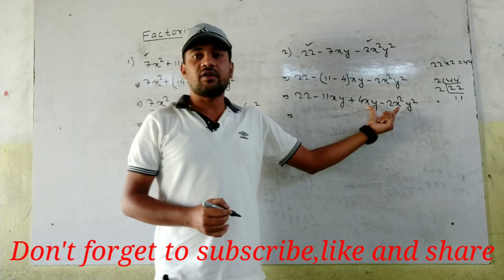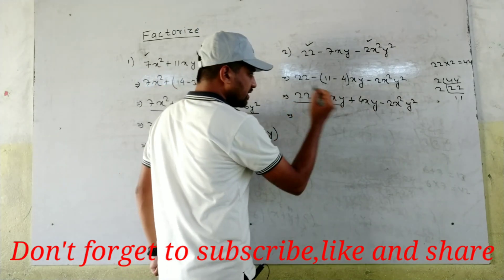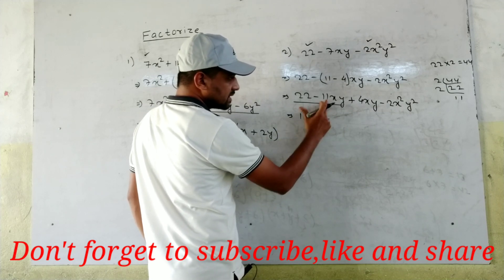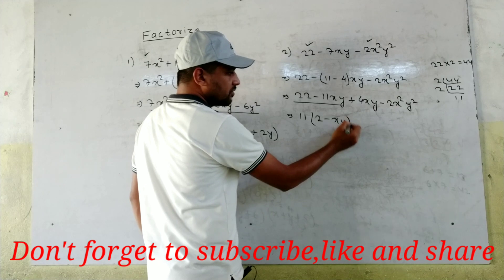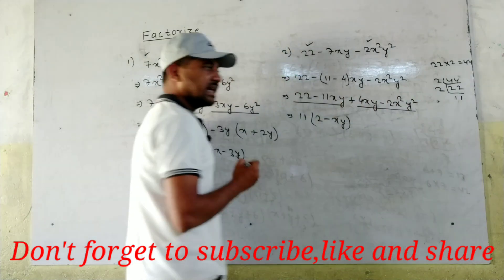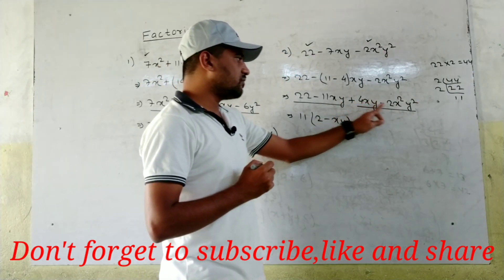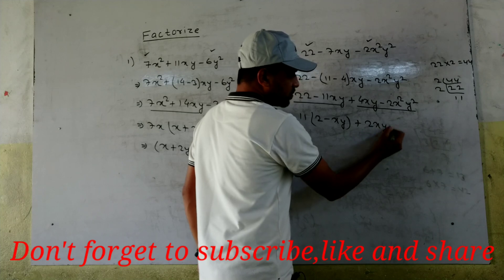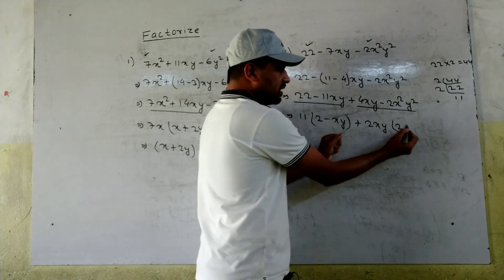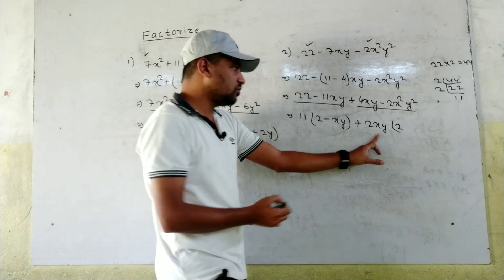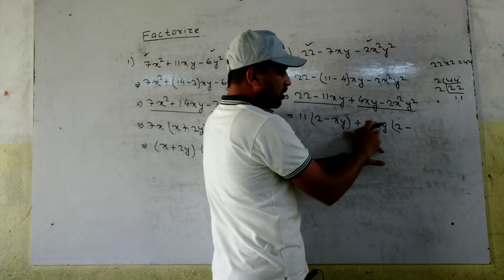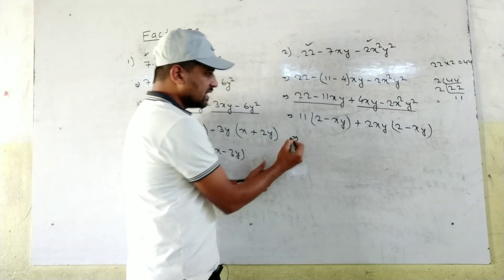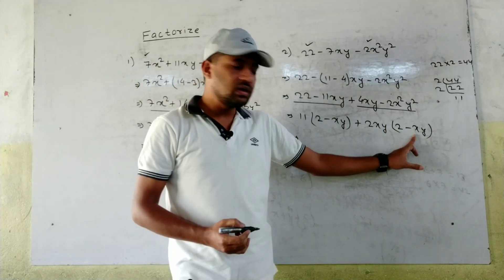From the first two terms, 22 and -11xy: 11 is common because 11 × 2 = 22. So we get 11(2 - xy). From the last two terms, 4xy and -2x²y²: the common is 2xy. So 4xy - 2x²y² = 2xy(2 - xy), because 2xy × 2 = 4xy, and 2xy × xy = 2x²y².